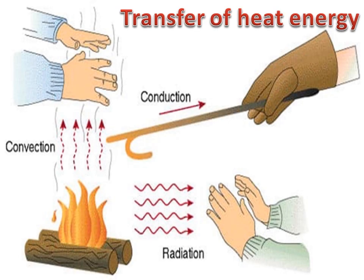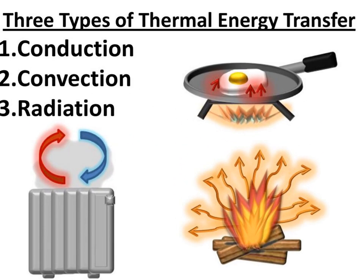Transfer of Heat Energy. Heat is a form of energy. It transfers from a higher temperature object to a lower temperature object. The heat flows from the warmer areas to the cooler areas. Thermal energy is the total of all kinetic energies within a given system. It is a part of the total energy of any object.